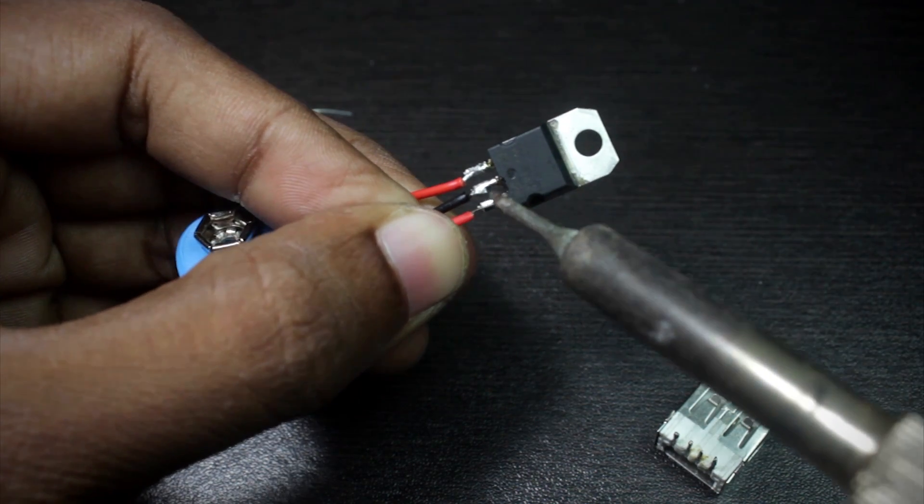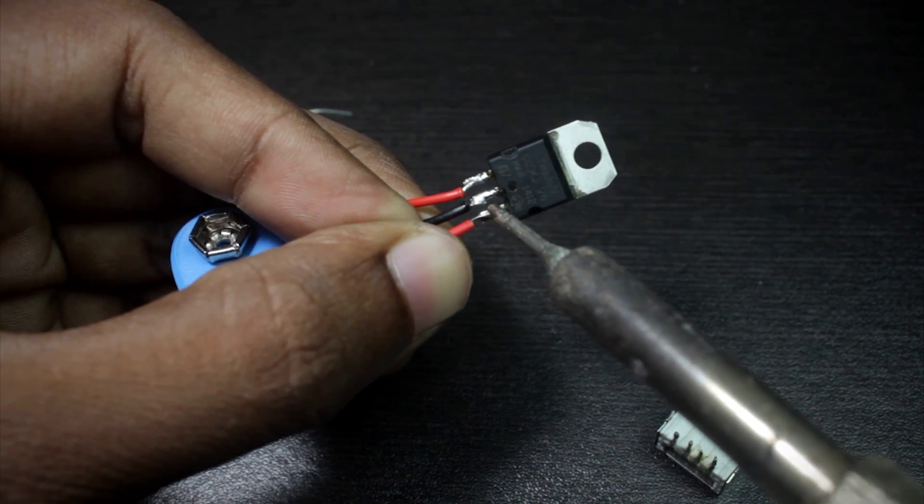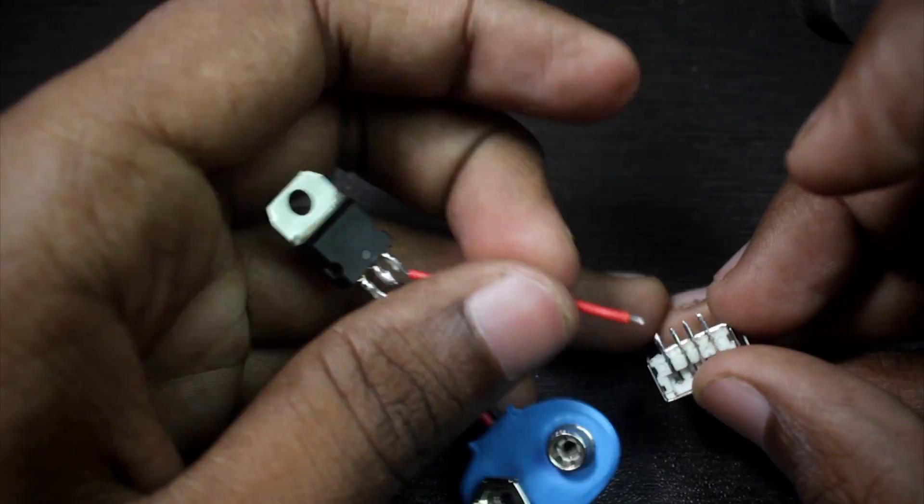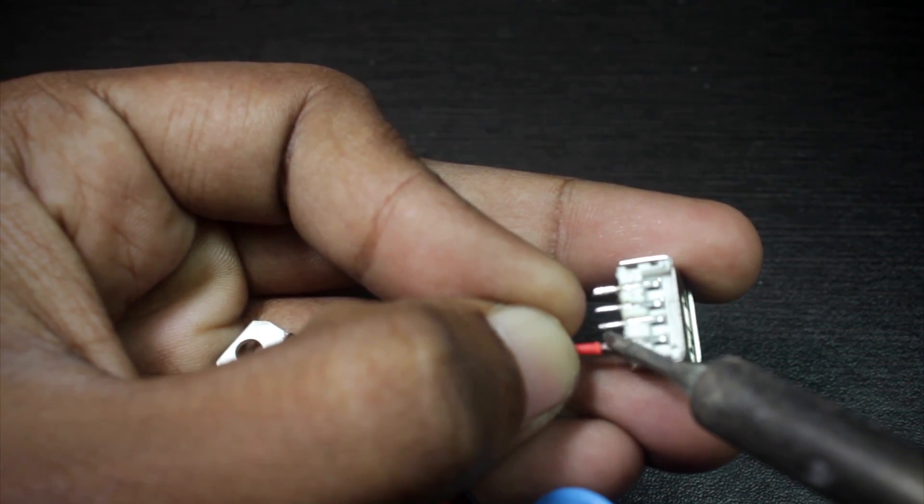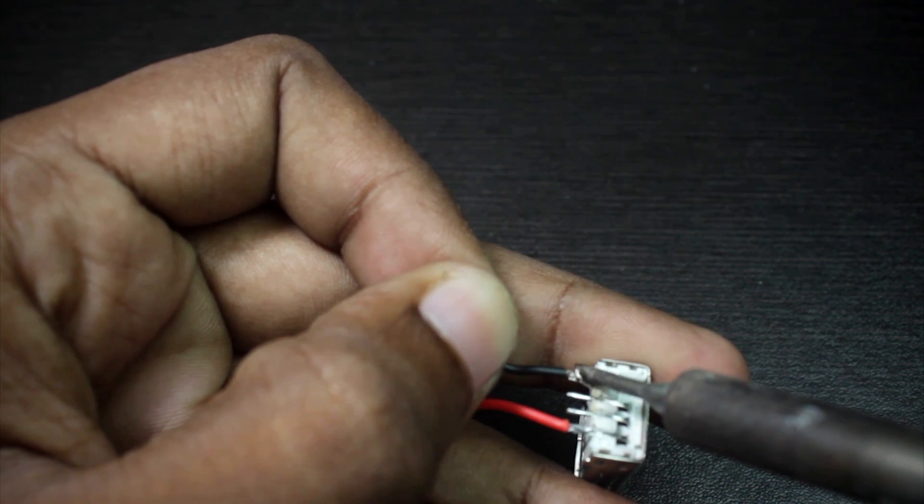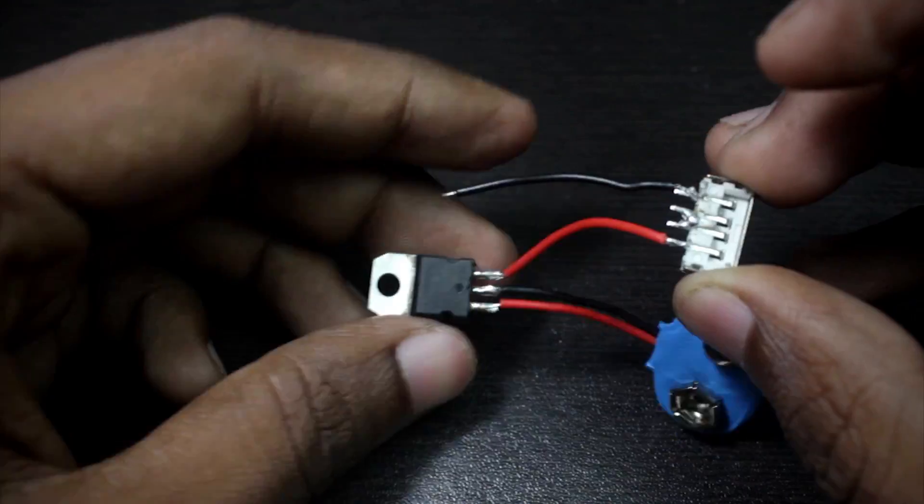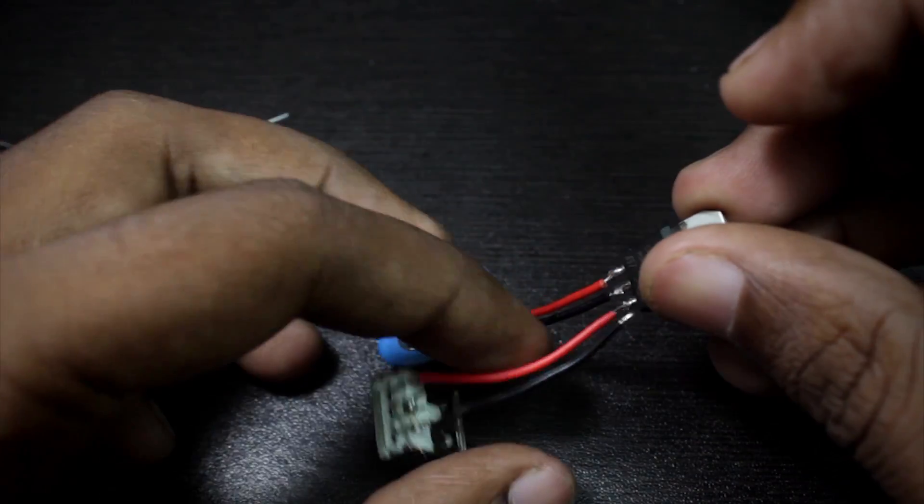Now take a short length of red wire and solder it to the output of the voltage regulator, and solder the other end of the wire on the positive side of the USB socket. Now solder the black wire to the negative side of the USB socket, and solder the other end of the black wire to the middle pin of the voltage regulator.